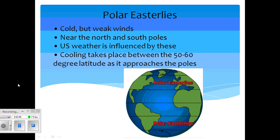Polar easterlies are cold but weak winds. They are located near the north and south poles. They also can influence weather in the United States. And cooling takes place between the 50 and 60 degree latitude as it approaches the poles.